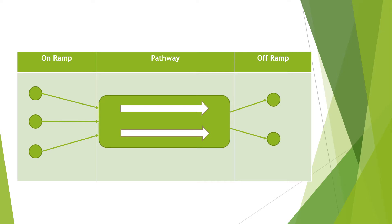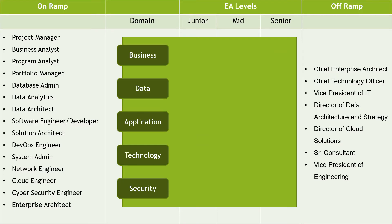On the left you see the on-ramp column, which indicates your prior skill set or your role. The pathway in the middle shows how this role gets on track with enterprise architecture. And then after you go through the motions of the different seniority levels, what opportunities you may have in the future, which would be covered under the off-ramp column. In the center you see a big green box which represents EA as a career, with smaller boxes inside representing the domains or layers of EA. I also show the level of seniority so that we can connect this with the off-ramp set of titles. Under the off-ramp column we have managerial or senior level roles.